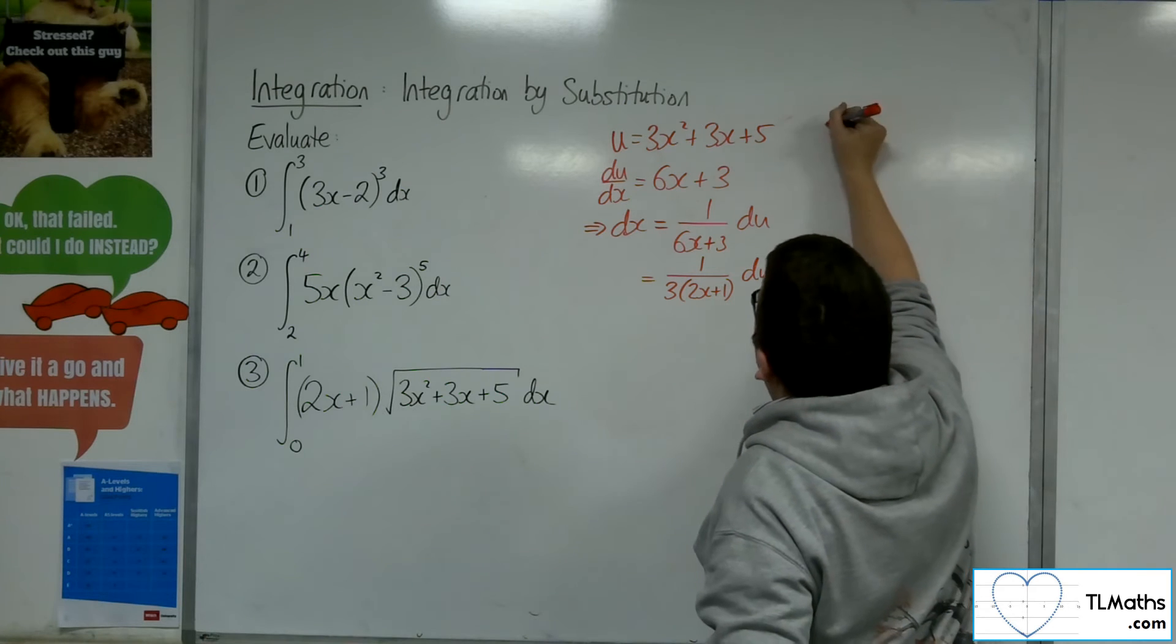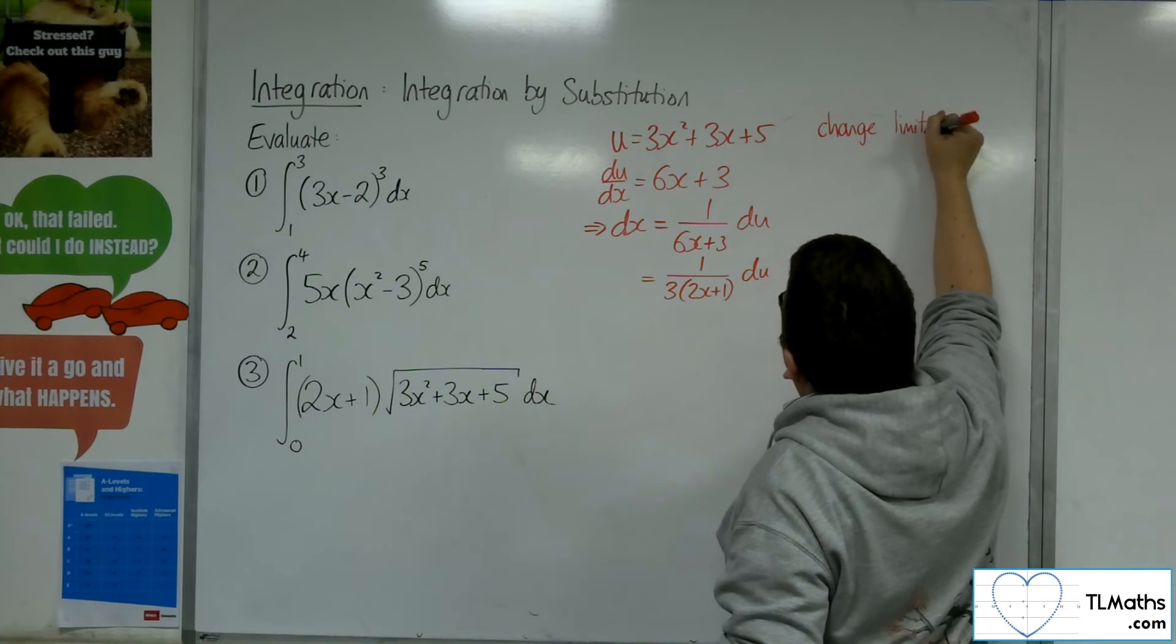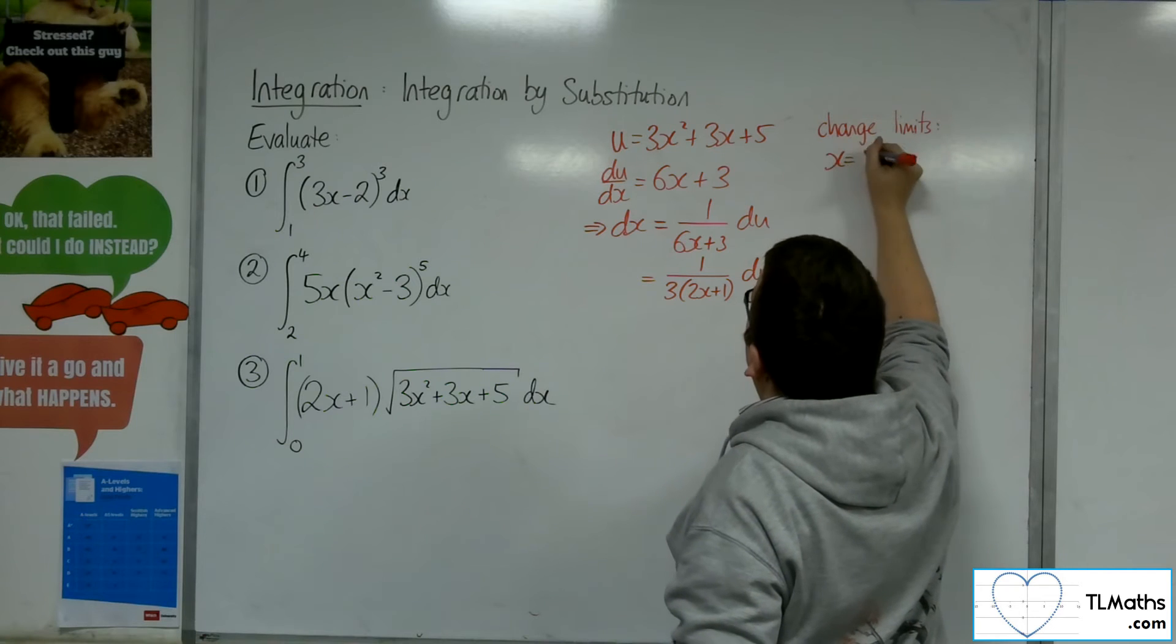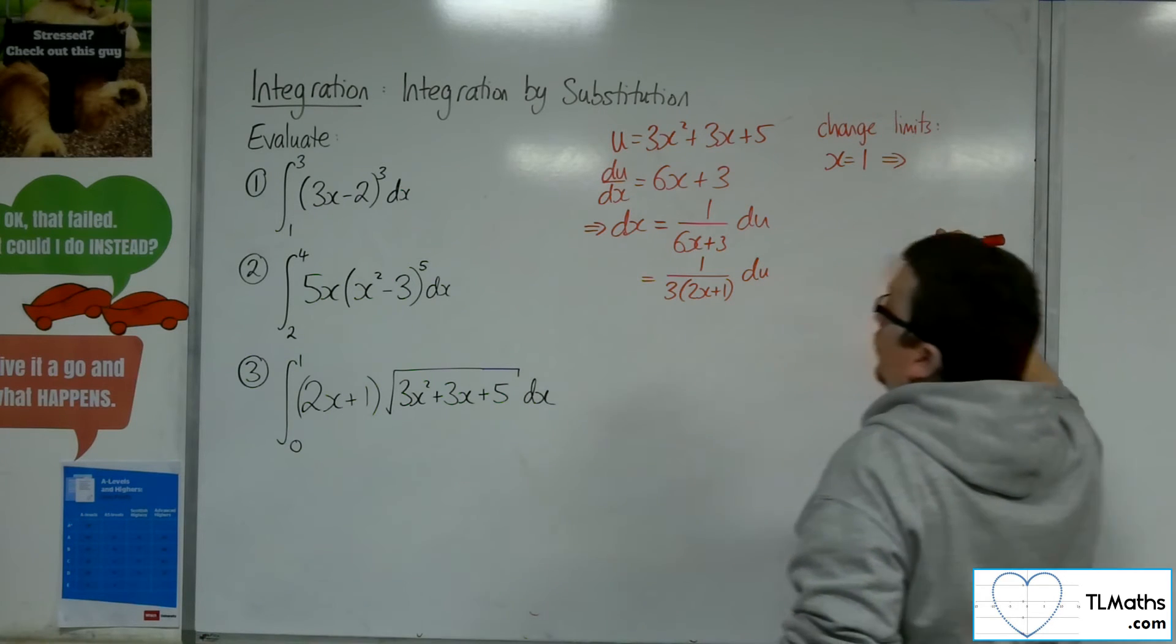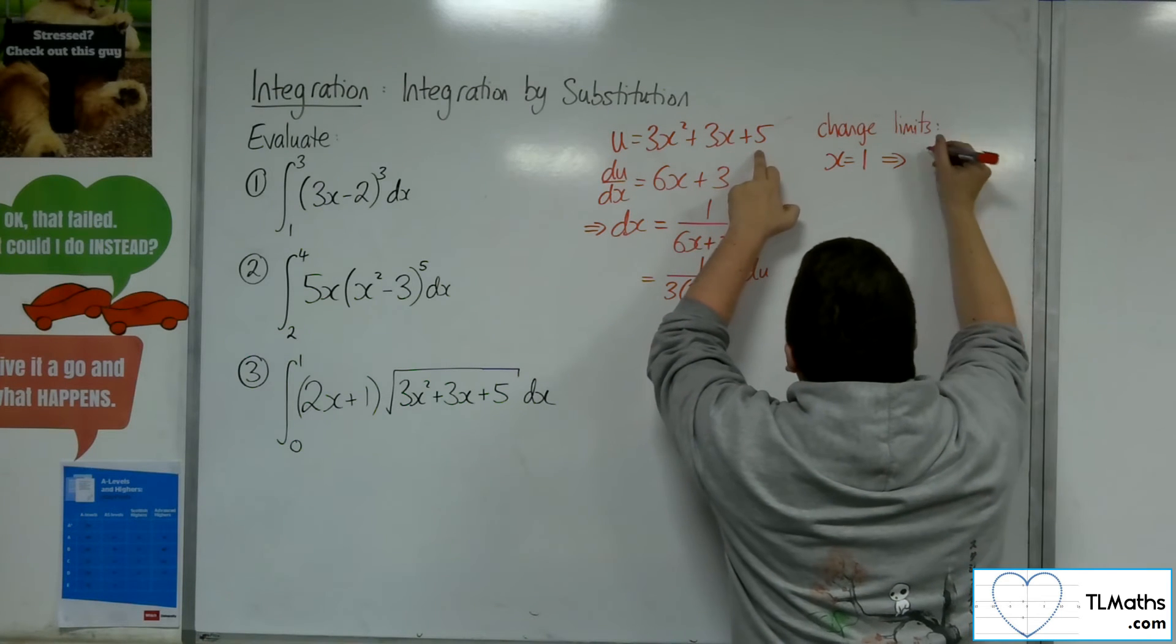Now let's change the limits. So when x is equal to 1, what are we going to get? We're going to get 3 plus 3 plus 5, so 11.